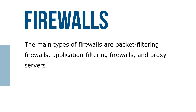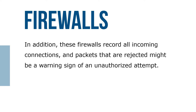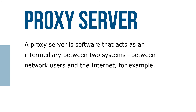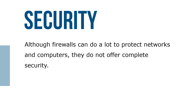The main types of firewalls are packet filtering firewalls, application filtering firewalls, and proxy servers. These firewalls record all incoming and outgoing connections, and rejected packets might be a warning sign of an unauthorized attempt. Application filtering firewalls are generally more secure and flexible than packet filtering firewalls, but they are also more expensive. A proxy server is software that acts as an intermediary between two systems — between network users and the internet. Although firewalls can do a lot to protect networks and computers, they don't offer complete security; sophisticated hackers and computer criminals can circumvent almost any security measure.